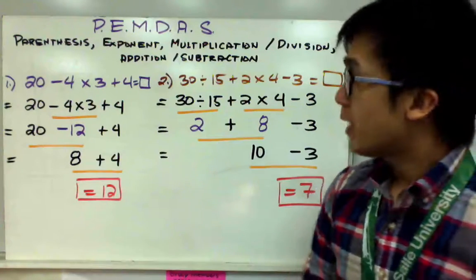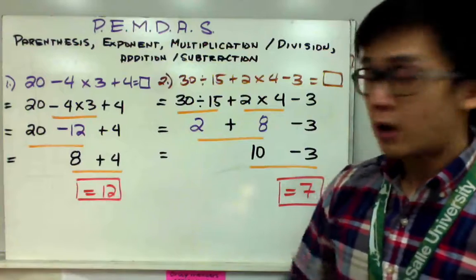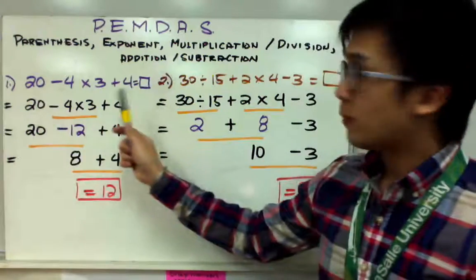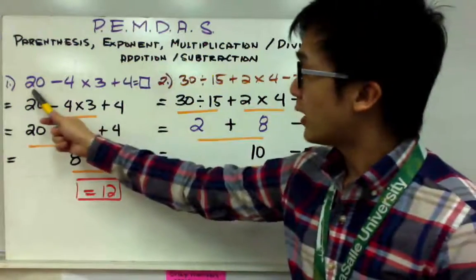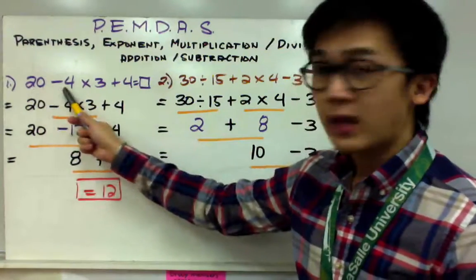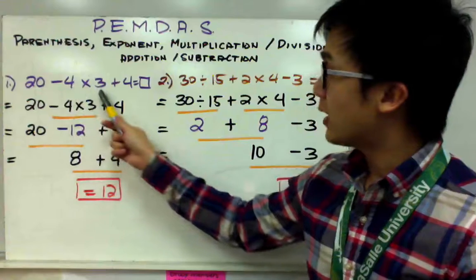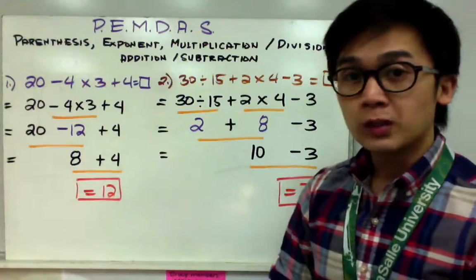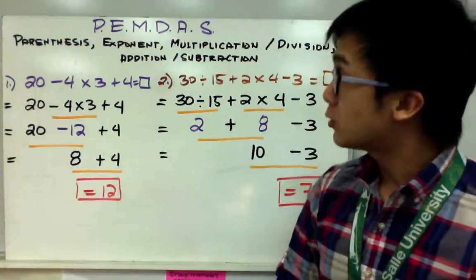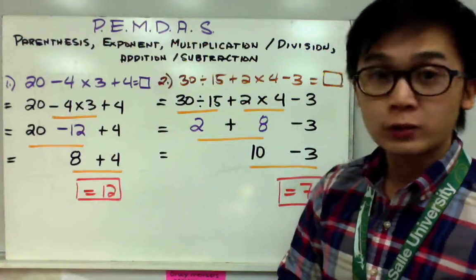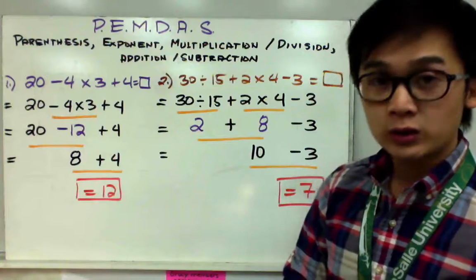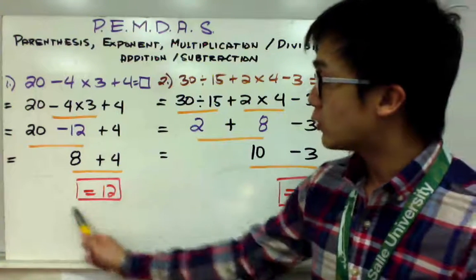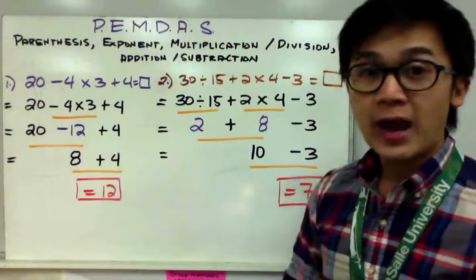If you worked this problem out as 20-4 first, then multiplied by 3, and then added 4, your answer would be wrong. Make sure you are using the correct order of operations to get 12 as your answer.